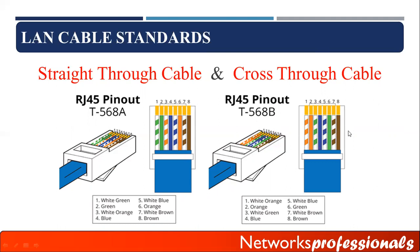We need two types of cables in a local area network: straight cable and cross cable. A straight cable uses the same color scheme on both ends — for example, 568A on one end and 568A on the other, or 568B on both ends. Straight cable is used to communicate between different layer devices.